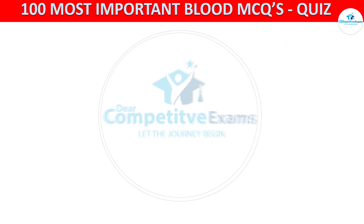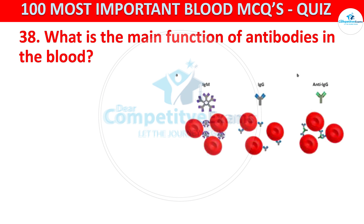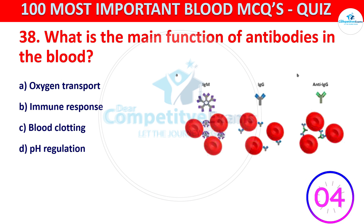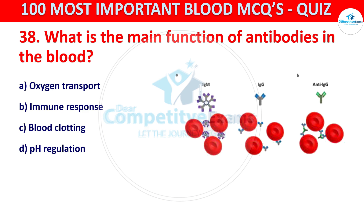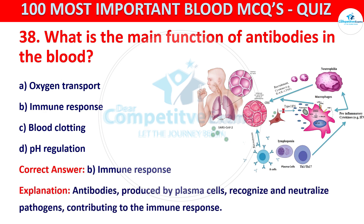Question number 38. What is the main function of antibodies in the blood? Your options include oxygen transport and immune response, among others. The correct answer is B, that is immune response. Antibodies produced by plasma cells recognize and neutralize pathogens, contributing to the immune response.